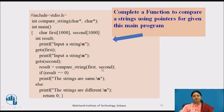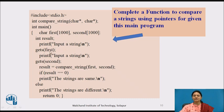Now check this program, then pause the video and write the function to compare a string using pointers for the given main program. The function is declared as integer compare_string with two pointer parameters: source and destination (or string1 and string2). In main, we take both string values using gets for first and second strings, then call compare_string supplying first and second strings. If result equals 0, the strings are the same; otherwise they are different.